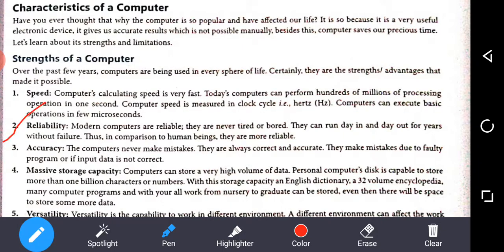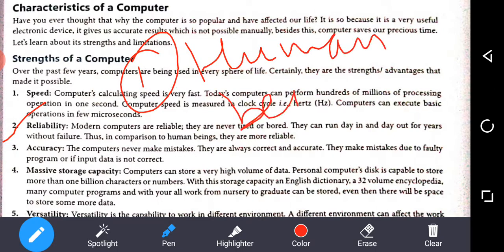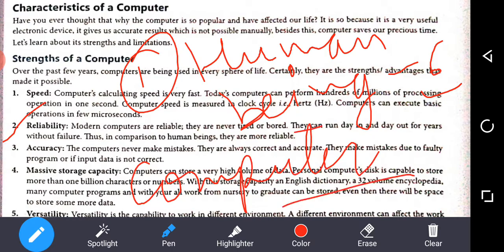Next is reliability. Modern computers are reliable. They are never tired or bored. They can run day in and day out for years without failure. Thus, in comparison to human beings, they are more reliable. If a human being has worked for 6 hours, then it will be tired, it will be bored. But computers can be used in work every day. They will not be bored.